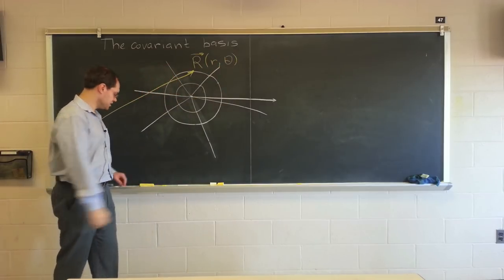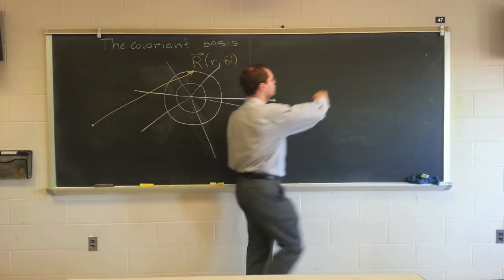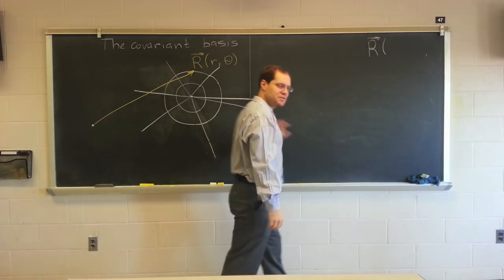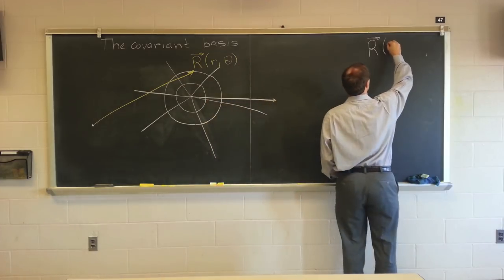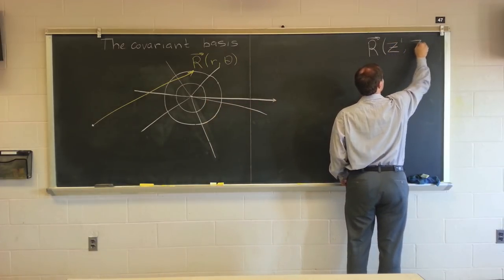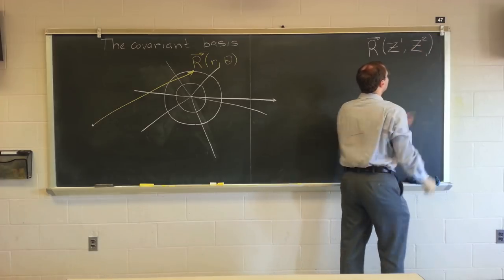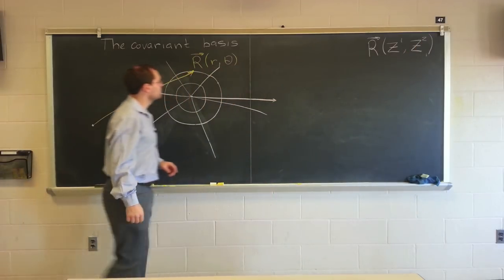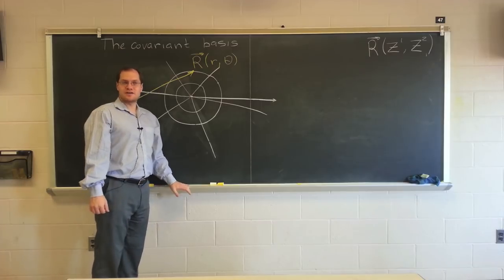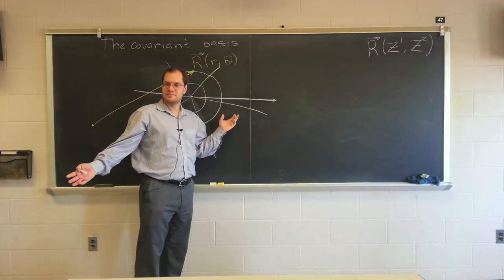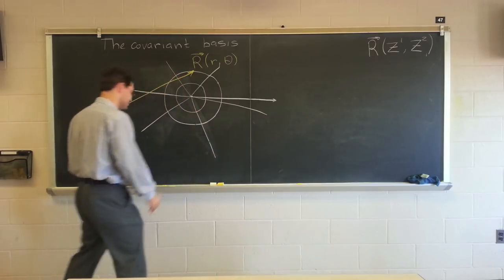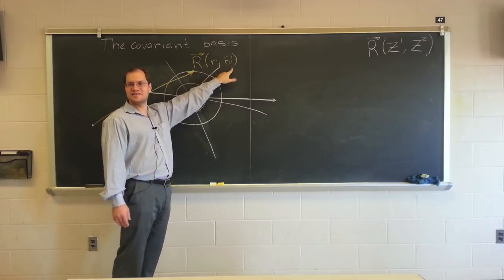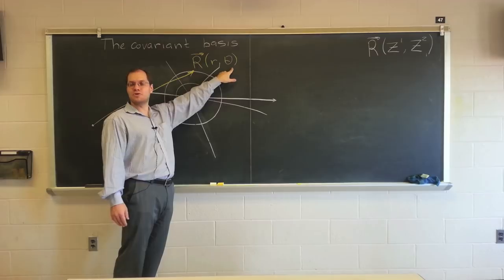More generally — here comes the first instance where you see new types of indices — r will be a function of our two coordinates. It could be r and theta, but generally it's z1 and z2. Coordinates are denoted by an upper index, a superscript. So now it's r and theta. When you have a function of r and theta, what can you do with it? Differentiate. You find dr/dr and you find dr/d theta. And that's your coordinate basis.